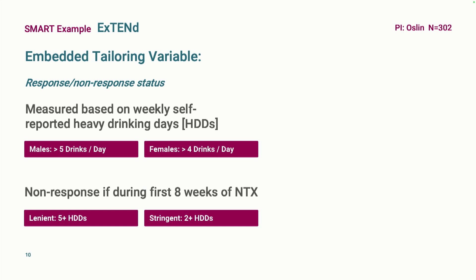The tailoring variable is response/non-response — two dimensions — based on weekly assessments. Rather than a fixed single time point, it uses eight time points of self-reported drinking days in the week's period. The definition differs for men and women: for men, a heavy drinking day is more than five drinks; for women, more than four. And of course the tailoring variable differs based on whether they were randomized to the lenient or stringent definition in stage one.